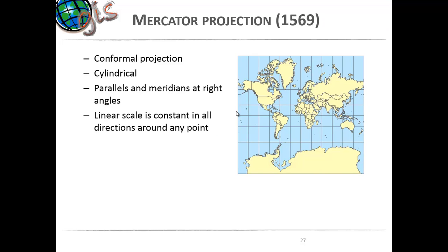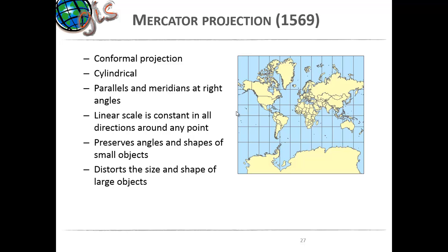There are other projections like the Mercator projection, which uses a conformal cylindrical projection. The parallels and meridians are at right angles, and linear scale is constant in all directions around any point. However, if you use this projection it's going to distort the size and shape of large objects — for example, Antarctica appears much larger than it actually is — so you have to use the right kind of projection to reduce distortions.